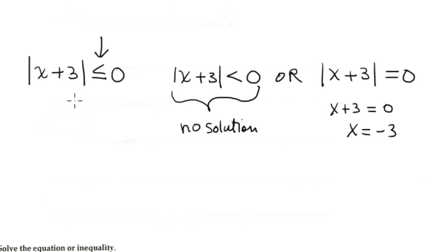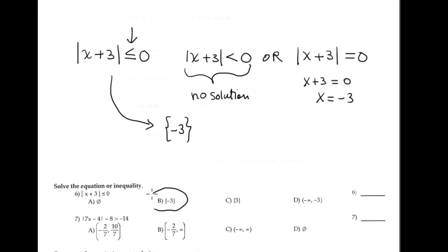Because it equals zero, it's negative three. Now the solution for the original problem is nothing or negative three, so it's just negative three, like option B.